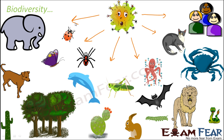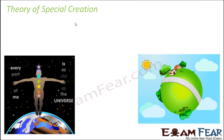So till now we just covered how the entire universe was formed, how earth was formed, and how life started to exist on earth. Now we will talk about how different life forms started coming up and how new life forms started emerging.